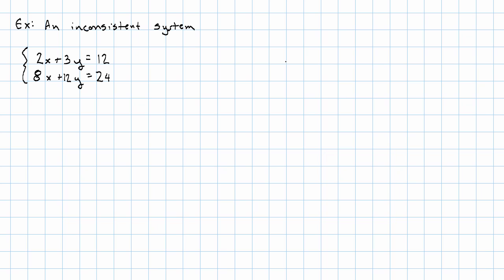If I were to graph this system, it would look something like this. This first equation has x-intercept 6, y-intercept 4. And then, the second equation has x-intercept 3, y-intercept 2, fill that in.